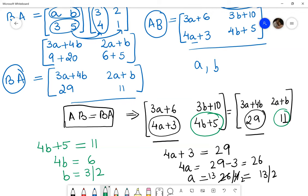So on solving this question, we get the value of A to be 13 by 2 and the value of B to be 3 by 2. So this is how you solve the matrix question when you are not given values, and I hope that you liked the video.